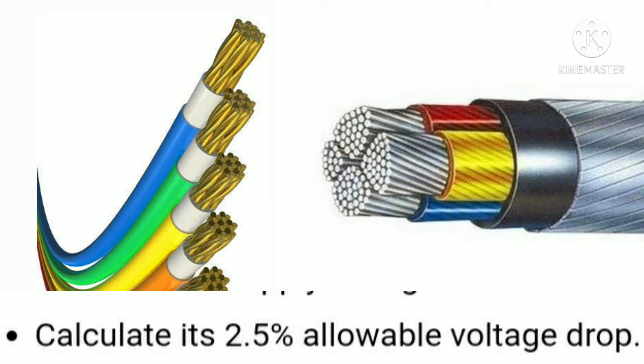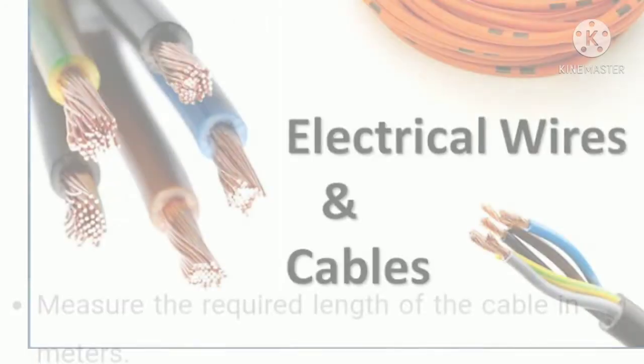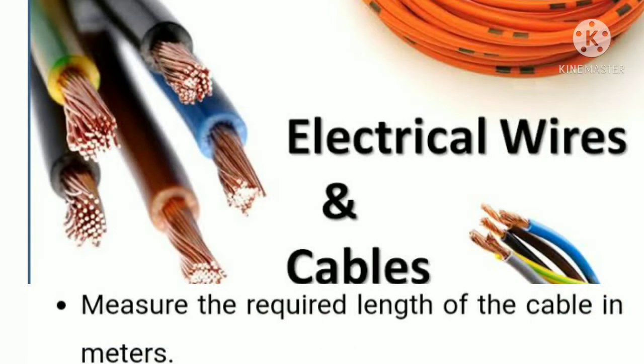The second point is to calculate the allowable voltage drop, which is 2.5 percent. If the voltage drop is higher than 2.5 percent, the cable size is not sufficient. It is allowed to have a voltage drop of 2.5 percent or less.